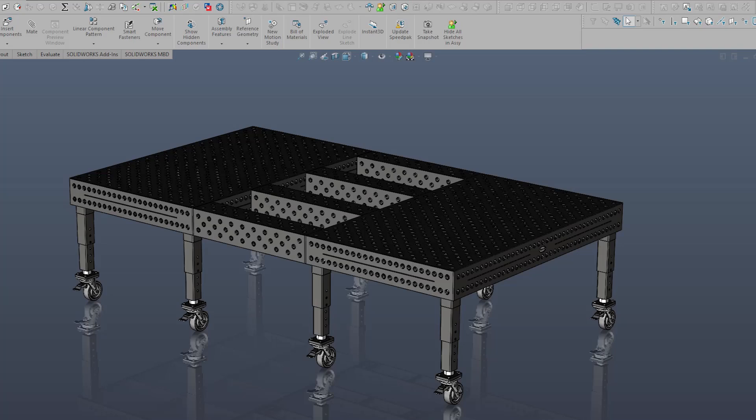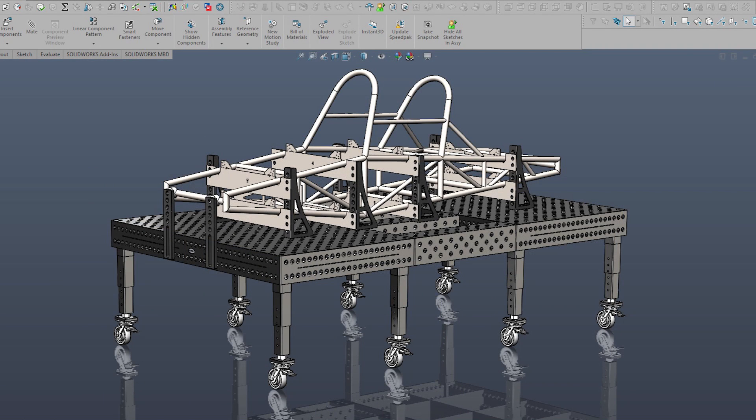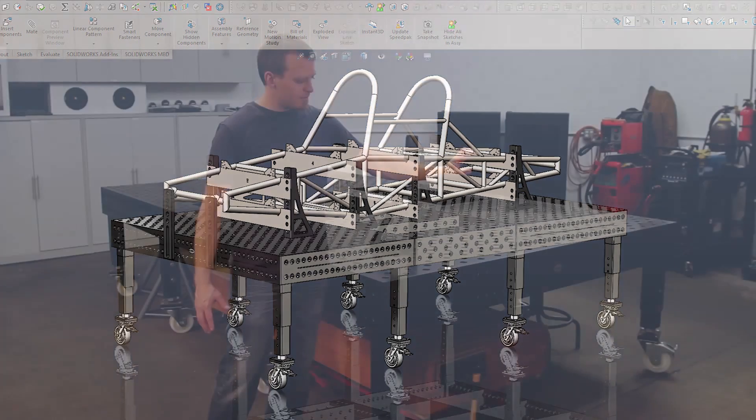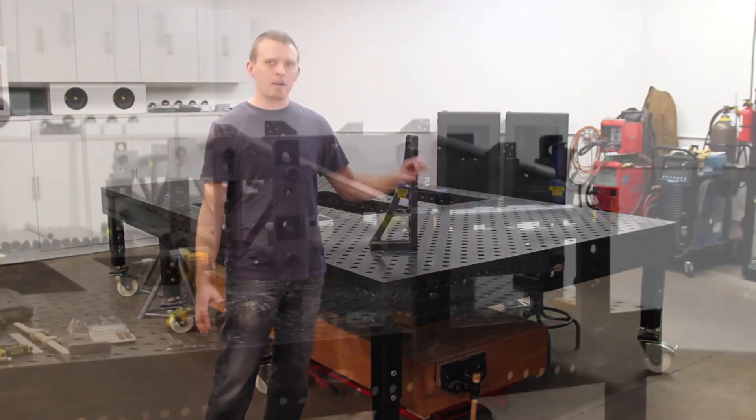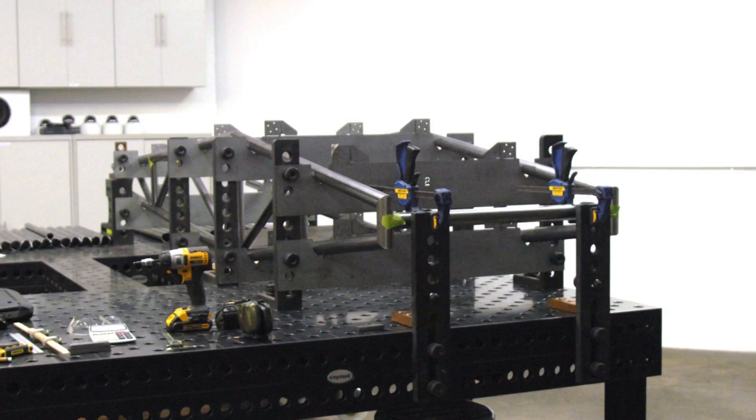And established our zero-zero location, which we used the side of the table and a set of prisms, which are just v-pads, to locate the front of the chassis at a set height. We have the chassis on the horizontal plane.